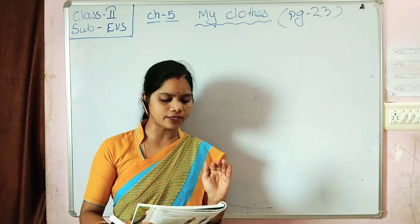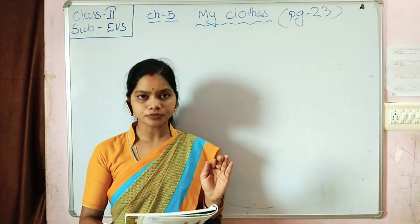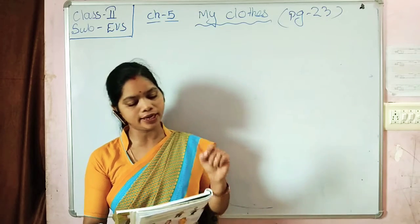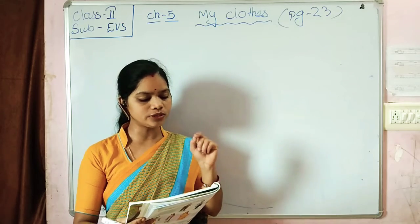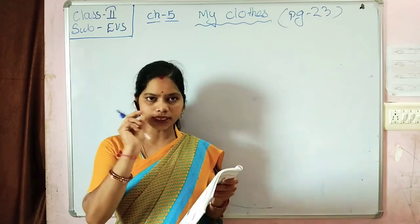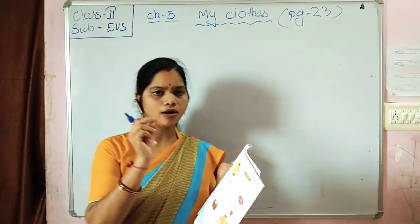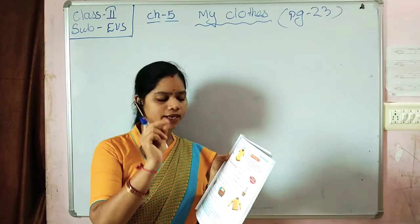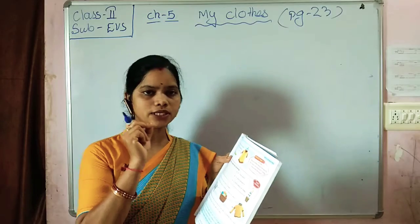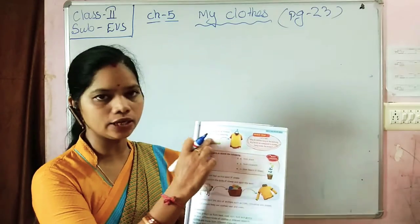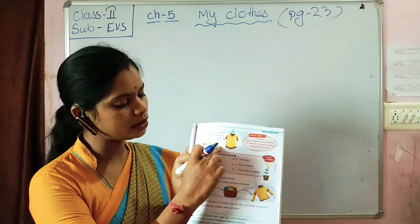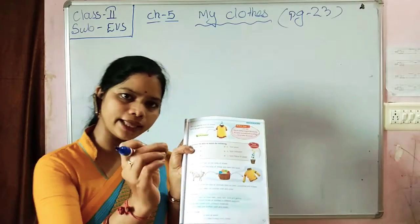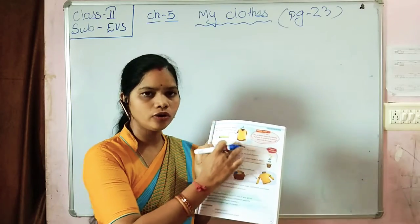Silk is a special kind of thread that we get from the silkworm. The silkworm is an insect. The thread from the silkworm is used to make silk cloth.